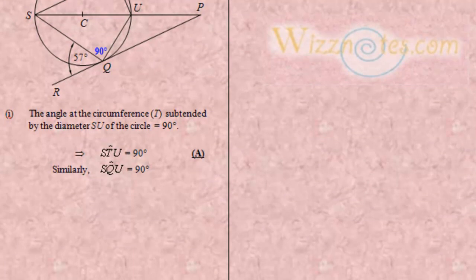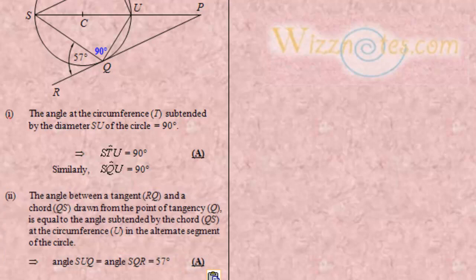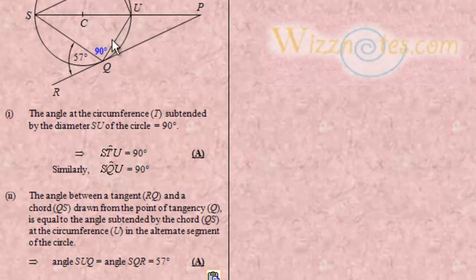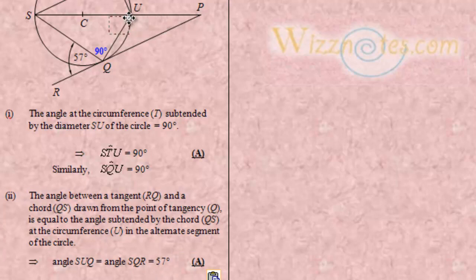The angle between tangent RQ and chord QS — drawn from the point of tangency — equals 57 degrees, and is equal to the angle subtended by chord QS at the circumference U in the alternate segment of the circle. Therefore angle SUQ equals angle SQR, which is 57 degrees. So we put 57 degrees in for that angle.